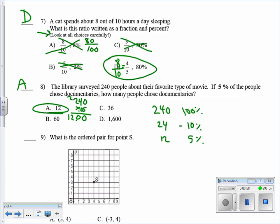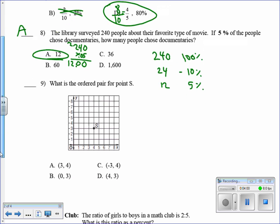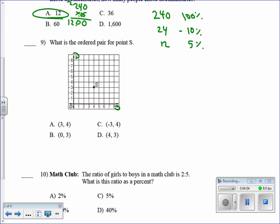All right, ordered pair. X before Y, just like the alphabet. This is X, this is Y. These aren't negatives. This is the first quadrant, it's all positives. X comes first, it's 4 on X. Y comes second, it's 3 on Y. (4, 3), D.